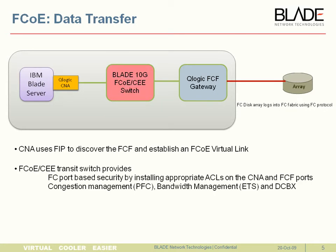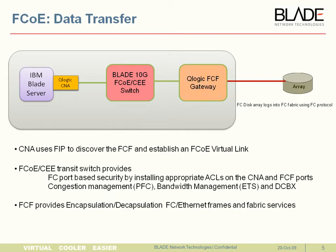The job of the FCoE-CE transit switch — the Blade 10-gig in the picture — is to provide ACL-based security, which is the equivalent of FC security, and also to provide DCB standards such as PFC, ETS, and DCBX. The FCF itself provides the encapsulation and decapsulation of the FCoE and FC traffic, and it also provides Fiber Channel fabric services.